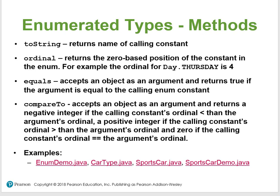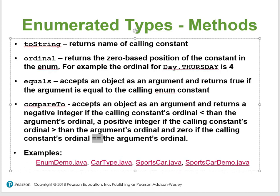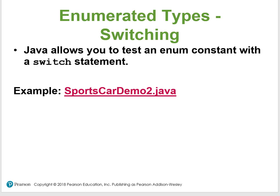Enum types have built-in methods: toString, ordinal, equals, and compareTo. The compareTo method uses == for comparison. Java also lets you test enum constants with a switch statement, which is a very clean way to work with enums.